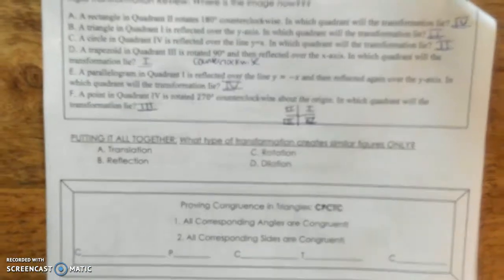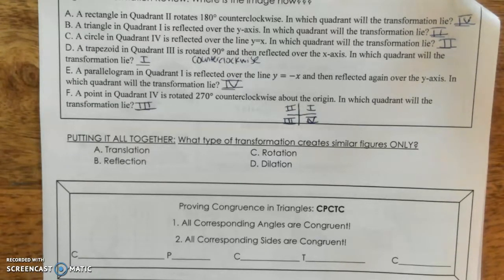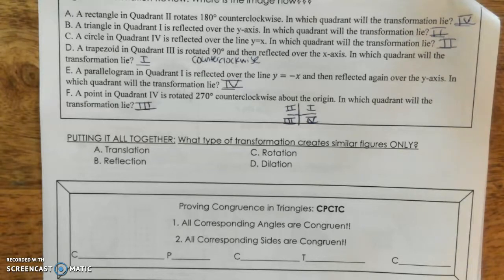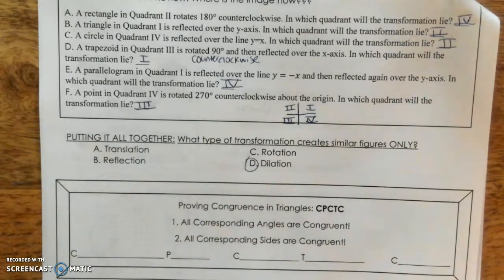Putting it all together: what type of transformation creates similar figures only? Is it A, translation; B, reflection; C, rotation; or D, dilation? Go ahead and circle your answer. The answer is D, dilation.